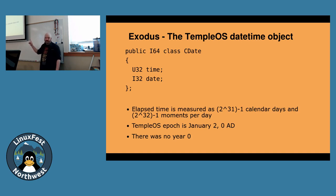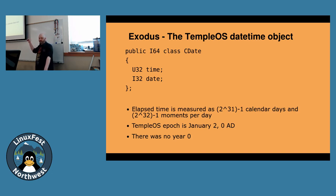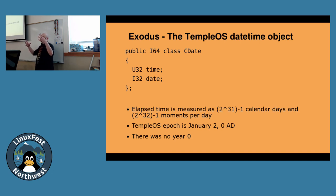Temple OS doesn't have that problem. There's a block of code written in HolyC — you should probably be able to figure out what it does just from looking at it. It says I64 — sounds like a 64-bit integer. There's a class called CDate containing two variables: one is U32 called Time, and one is I32 — a signed 32-bit integer called Date. Temple OS measures time in a 64-bit format, but not 64 bits of counting seconds. It measures moments of time in one given day, and then counts calendar days since its epoch — day zero, day one, which was the 2nd of January in 0 AD.